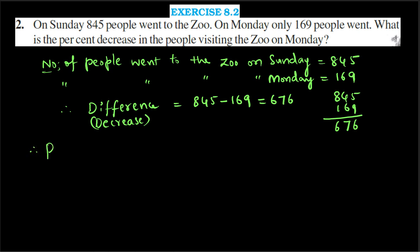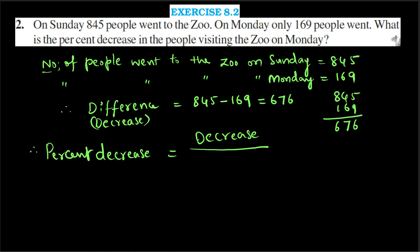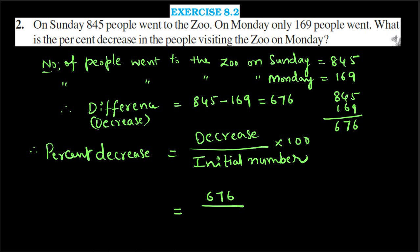Percent decrease equals decrease divided by the initial number (number of people on Sunday), times 100. That equals 676 divided by 845, times 100.